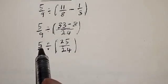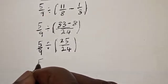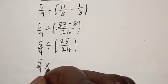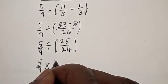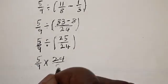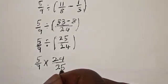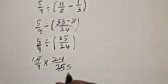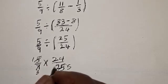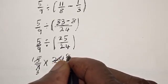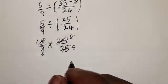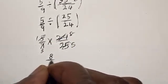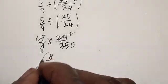We are done with the bracket. What remains is division: 5 over 9, then change the division sign to multiplication and take the reciprocal — 24 over 25. Simplify: 5 cancels with 25 giving 5, and 3 cancels. Therefore 8 times 1 = 8 in the numerator, and 3 times 5 = 15 in the denominator. Final answer is 8 over 15.